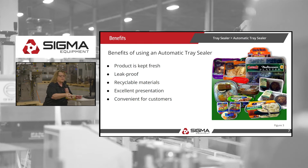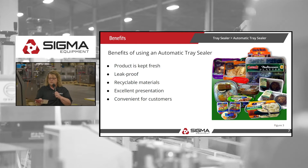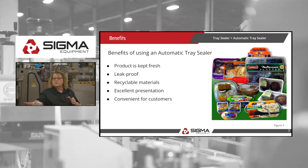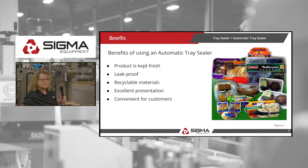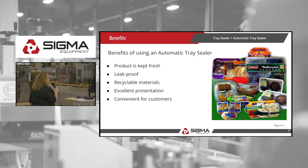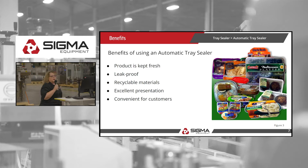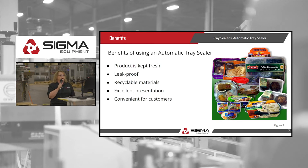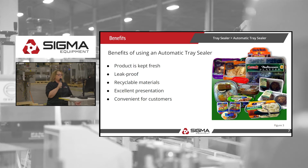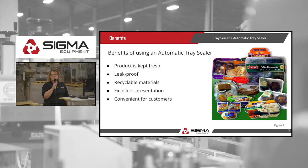I wanted to pass this around — it's an example of a tray-sealed product. In the picture, some of the examples are an olive platter, cooked meat, cooked burgers, mashed potatoes — you've all seen those in the store — and fresh vegetables in a tray pack.